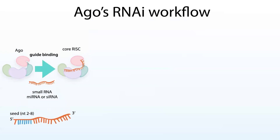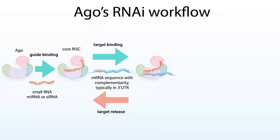These small RNAs are around 22 nucleotides long, and at their five prime ends they have a six to eight nucleotide long seed sequence that allows Ago to use them as guides to find and bind to messenger RNA targets that contain complementarity to the seed sequence and variable amounts of downstream complementarity. These sites are typically located in the three prime untranslated region — the three prime UTR — of the messenger RNA targets.